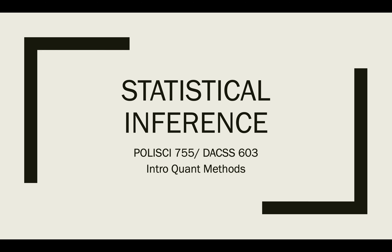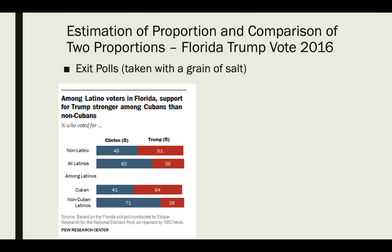We're going to be talking about one tiny bit of statistical inference — a good place to start — and that's estimation of a proportion, and then in a subsequent video a comparison of two proportions using the same example. We're going to use exit polls from the US presidential election 2016, specifically the returns in Florida, looking at the overall vote for Trump versus Clinton, focusing on the proportion of Trump votes specifically, since there are also Clinton votes and votes for smaller parties.